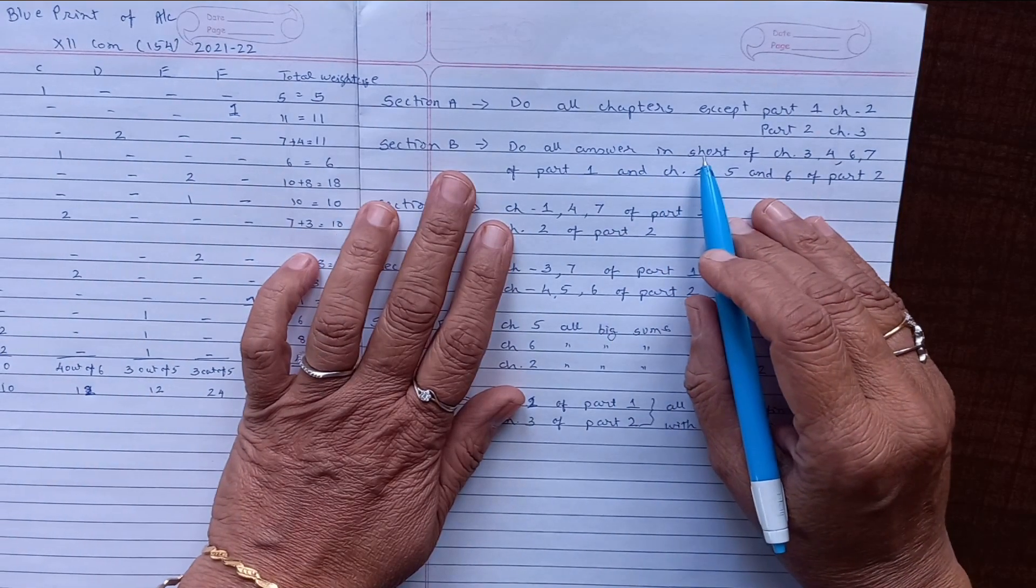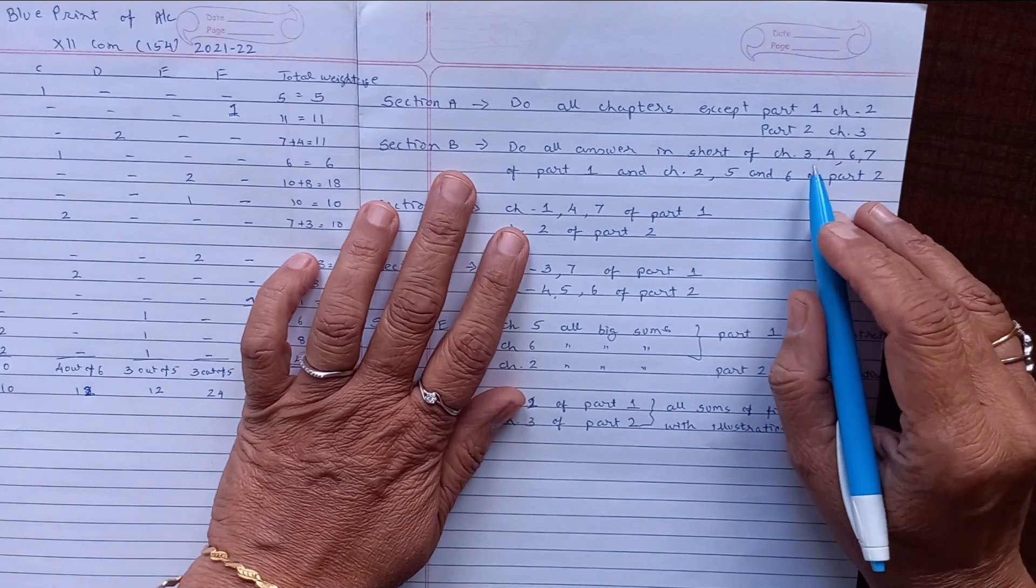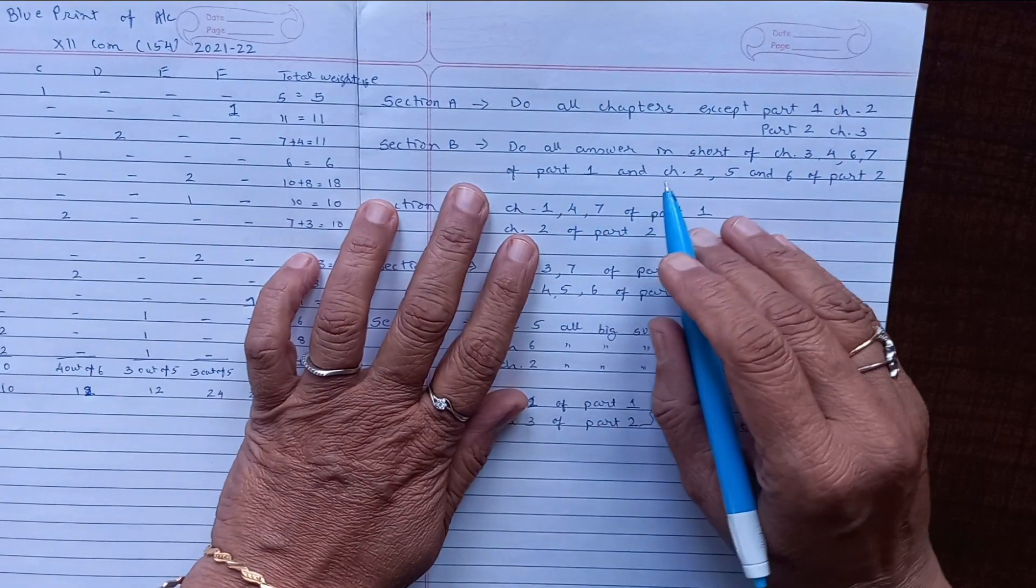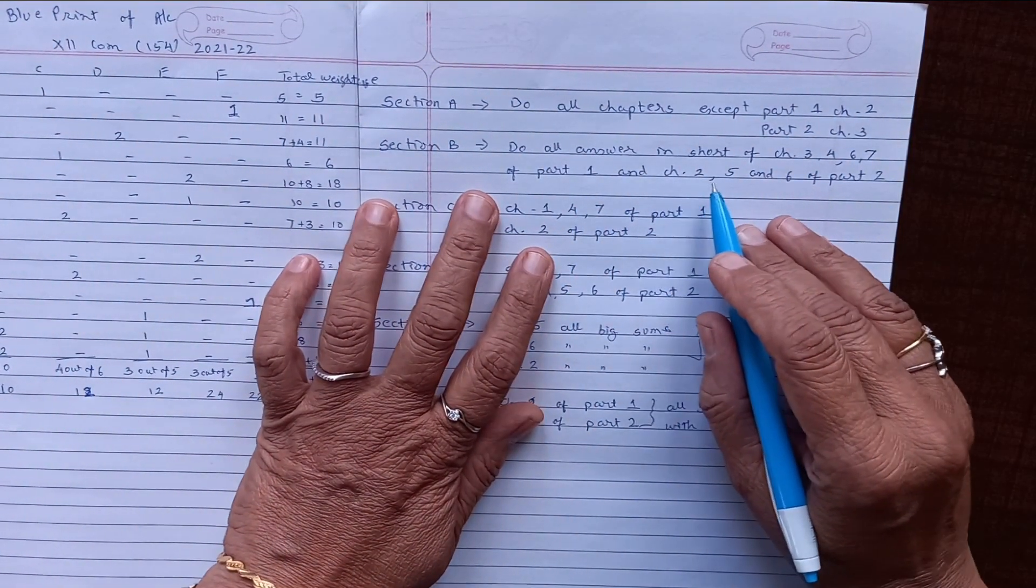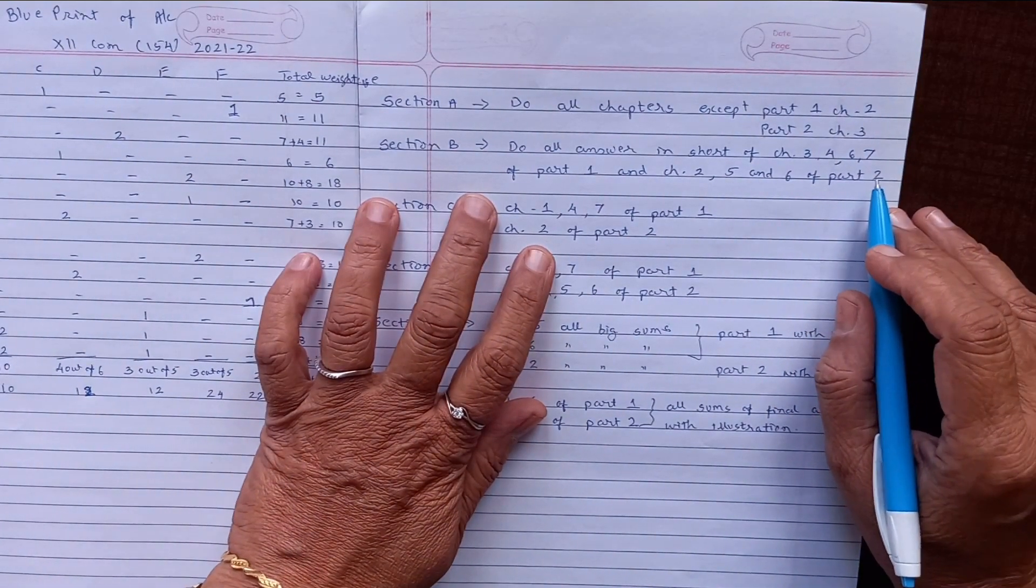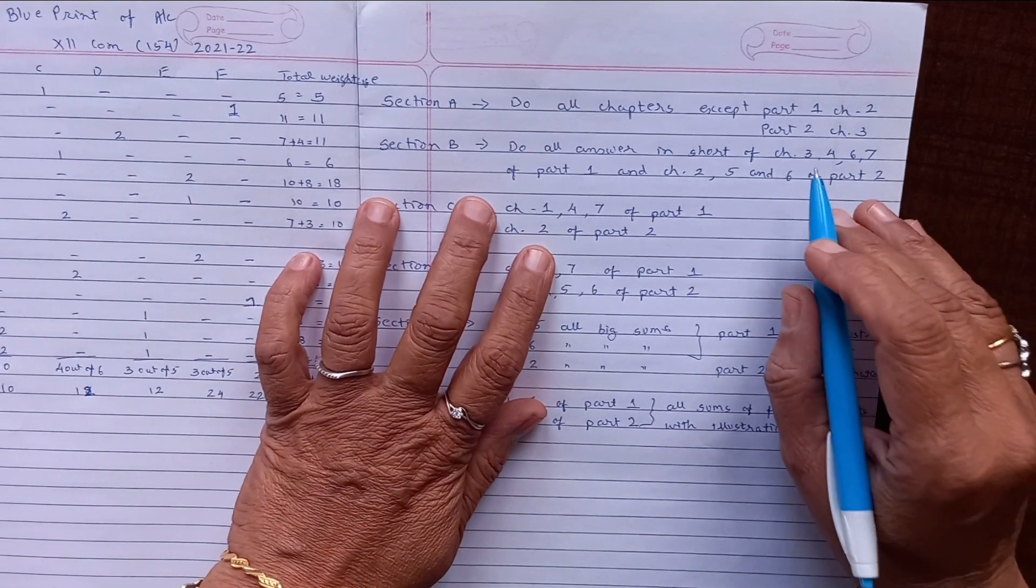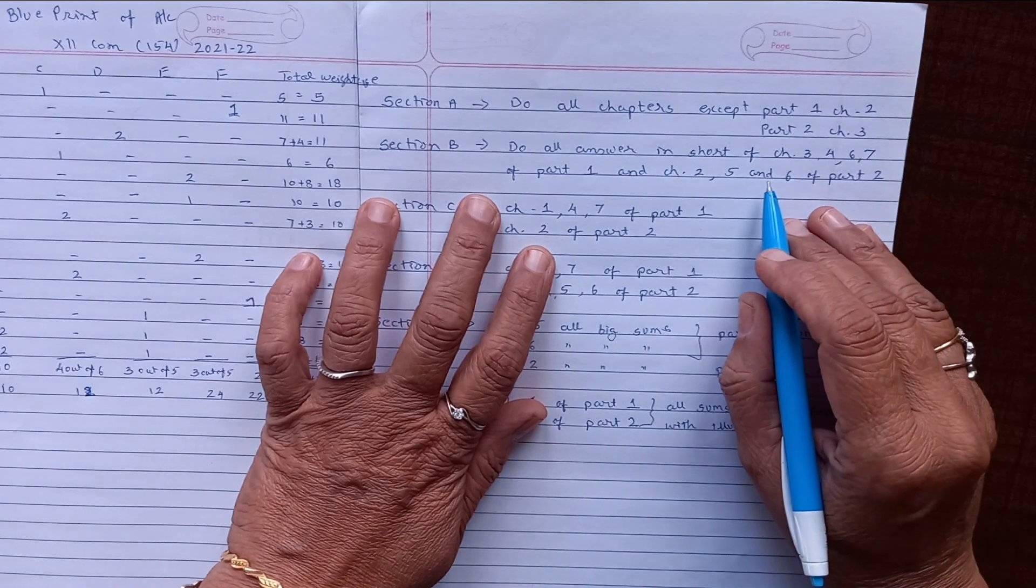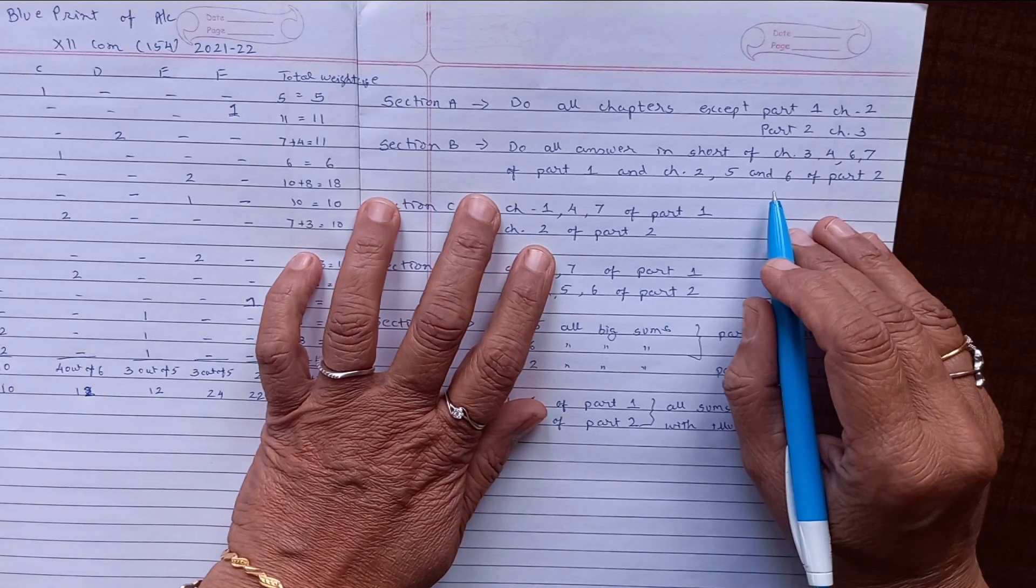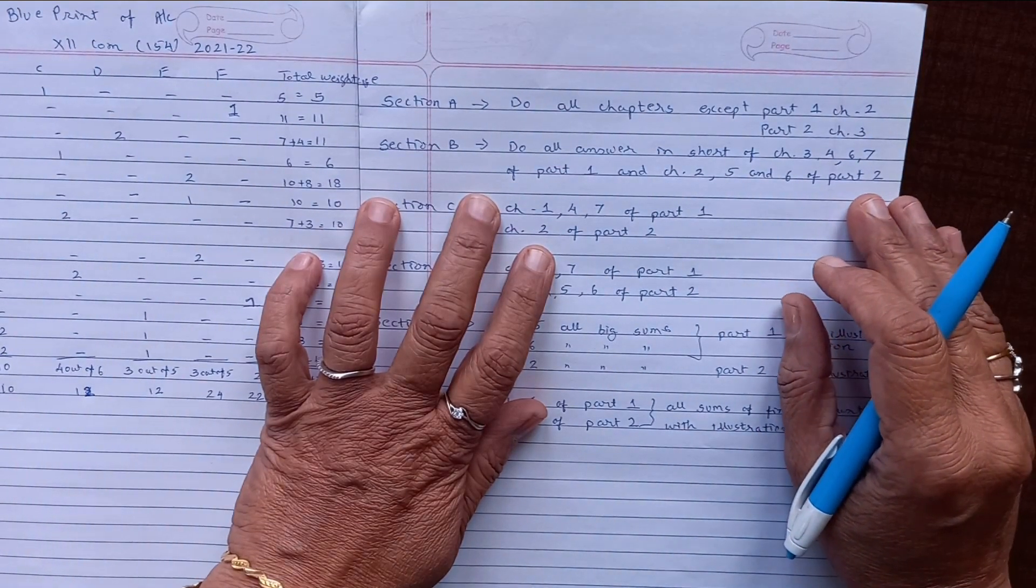For Section B, you can understand that all the short answer questions are given from chapter number 3, 4, 6, and 7 of part one, and chapter 2, 5, and 6 of part two, because most of the one-liner questions they have asked from these chapters. But again, I advise every paper setter has their own blueprint. I keep on saying every time, and if ten questions are there, they may try to give justice to most of the chapters.